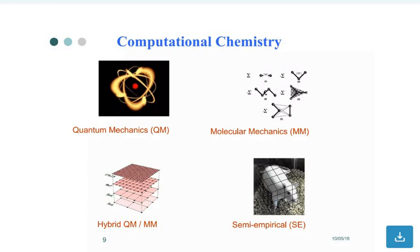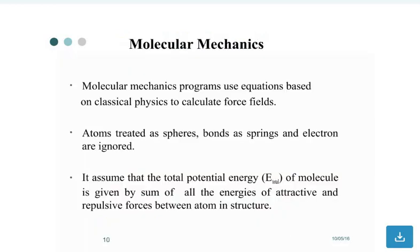Look at here: Computational Chemistry includes Quantum Mechanics (QM), Molecular Mechanics (MM), Hybrid Quantum Mechanics and Molecular Mechanics, and Semi-Empirical Methods.